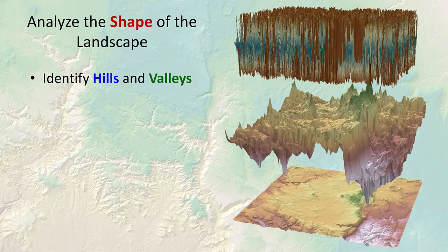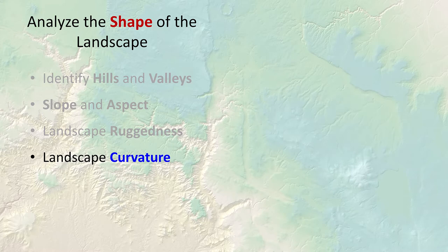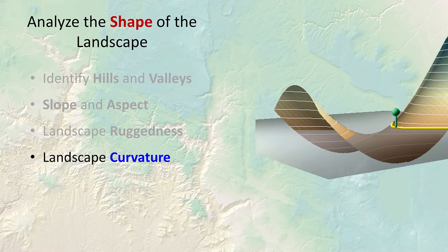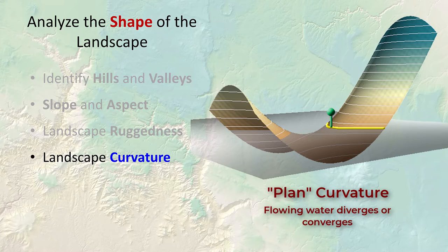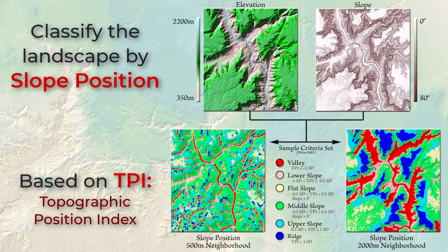GIS is also good for analyzing the shape of the landscape. We can identify hills and valleys, calculate slopes and aspects, and estimate the ruggedness of the landscape in many different ways. Then there's curvature, which tells you how water behaves as it flows over a point — water might accelerate or decelerate, diverge as if flowing down a ridge line, or converge as if in the bottom of a drainage. Curvature is also good for estimating how protected or exposed a location is.